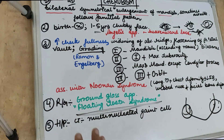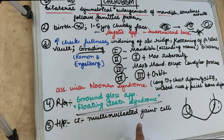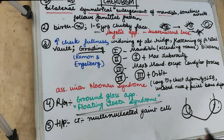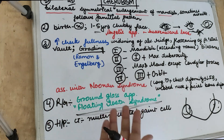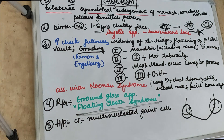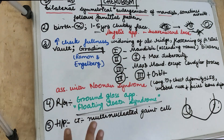Cherubism is usually associated with Noonan syndrome, which features congenital heart disease, chest deformity, mental retardation, facial bone anomalies, webbed neck, gingival fibromatosis, blood coagulation disorder, and obstructive sleep apnea. All these features are characteristic findings associated with cherubism.